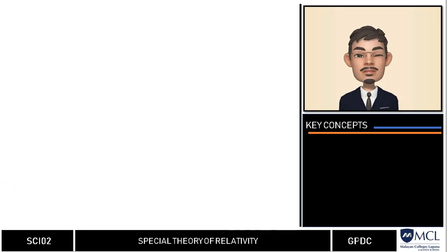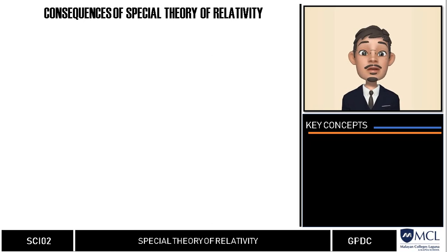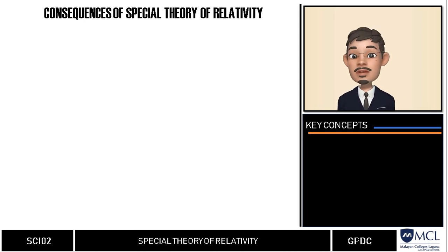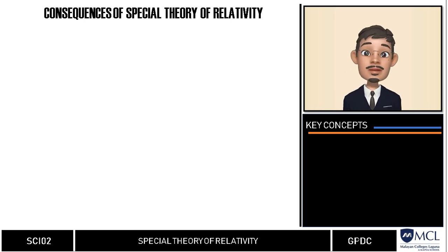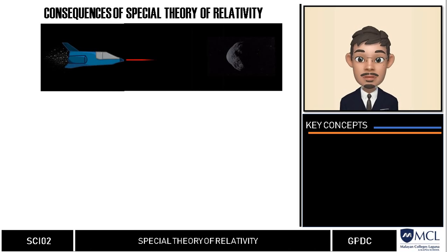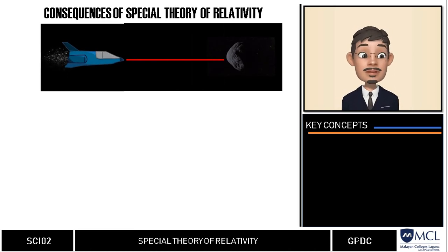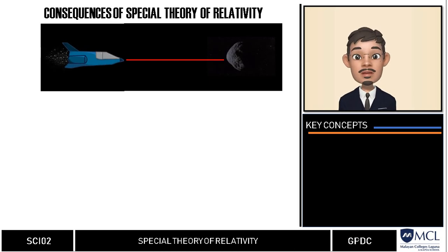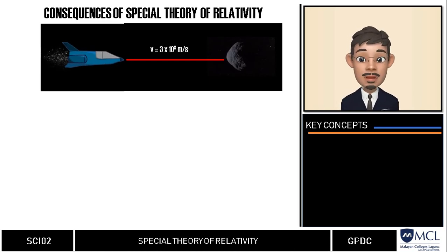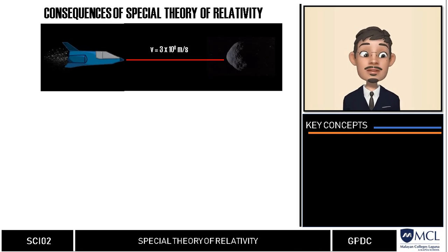The postulates of the special theory of relativity have several consequences. For example, if a spaceship fires a laser beam at an asteroid moving toward it at half the speed of light, the laser beam hitting the asteroid would still travel at exactly the speed of light — not 1.5 times the speed of light.